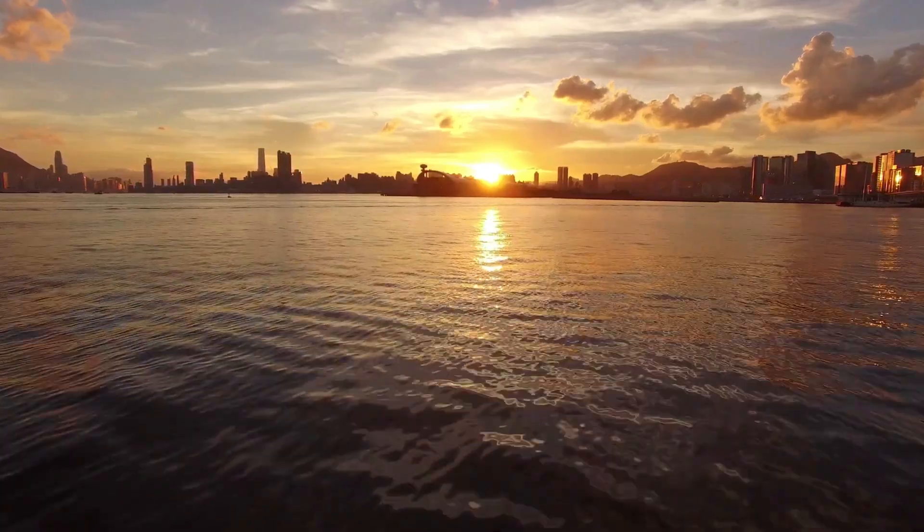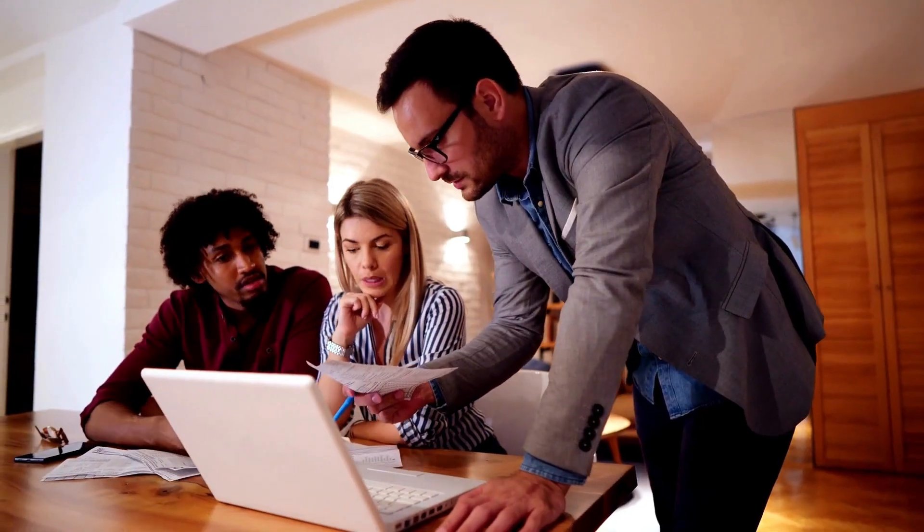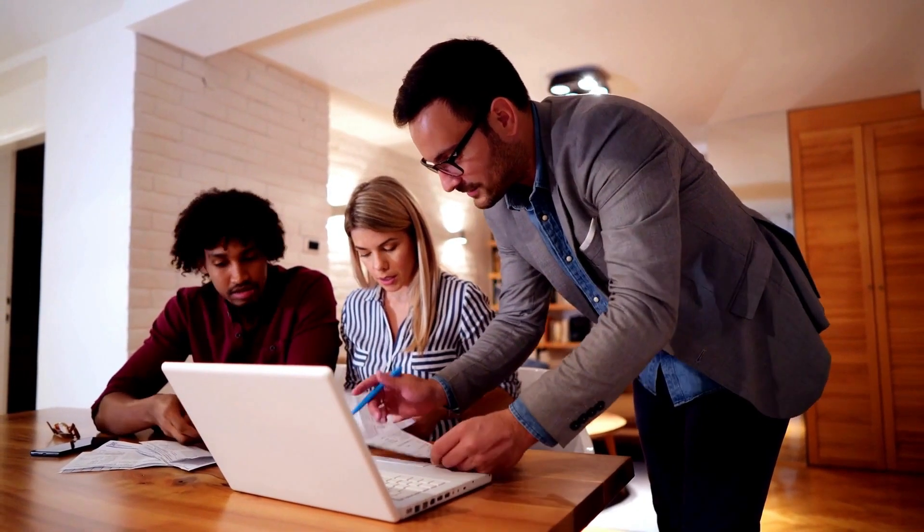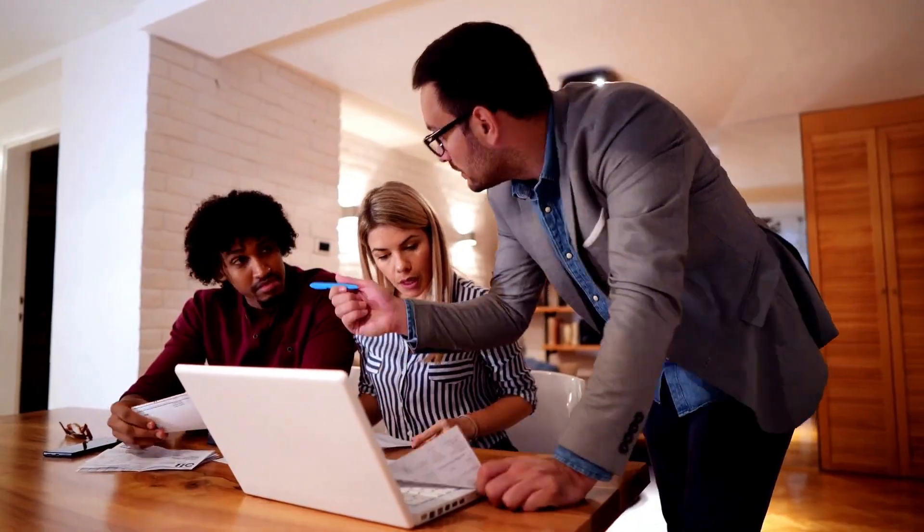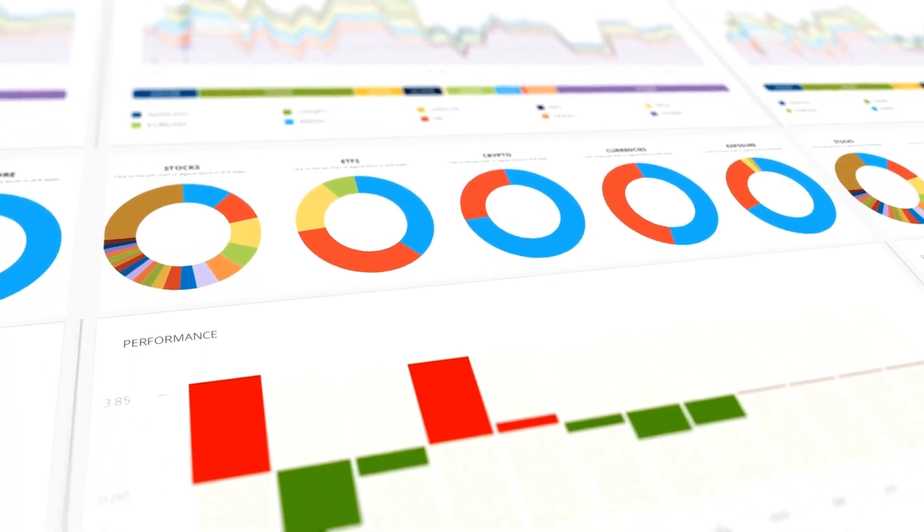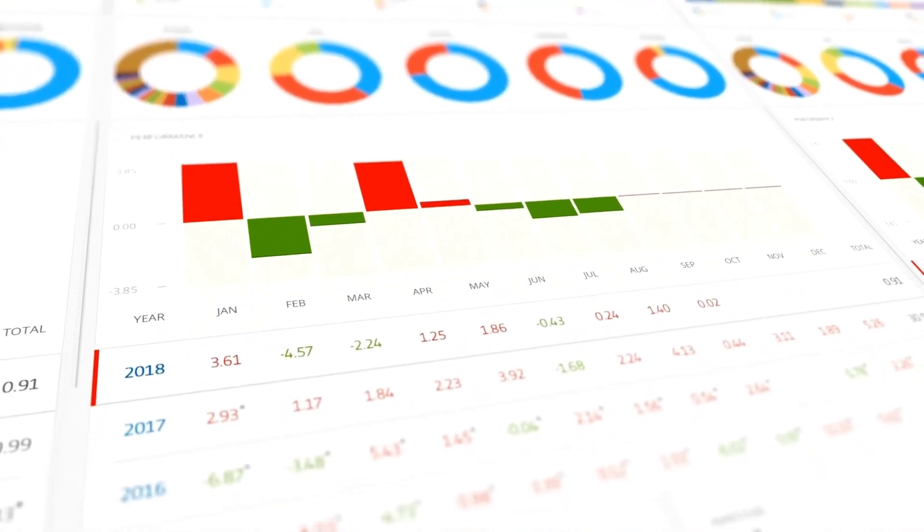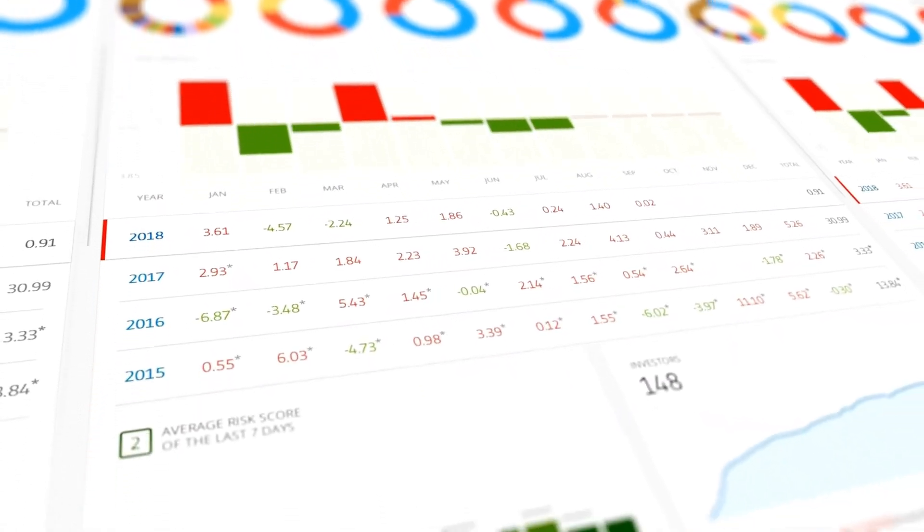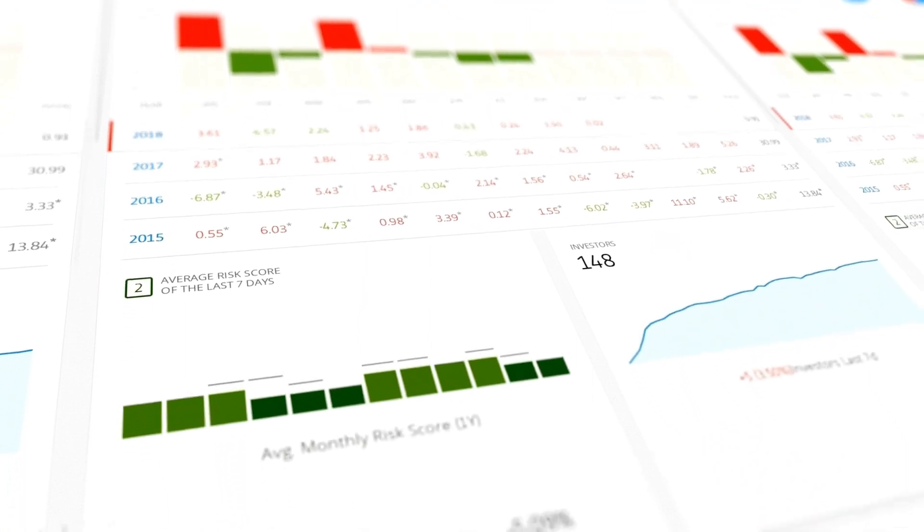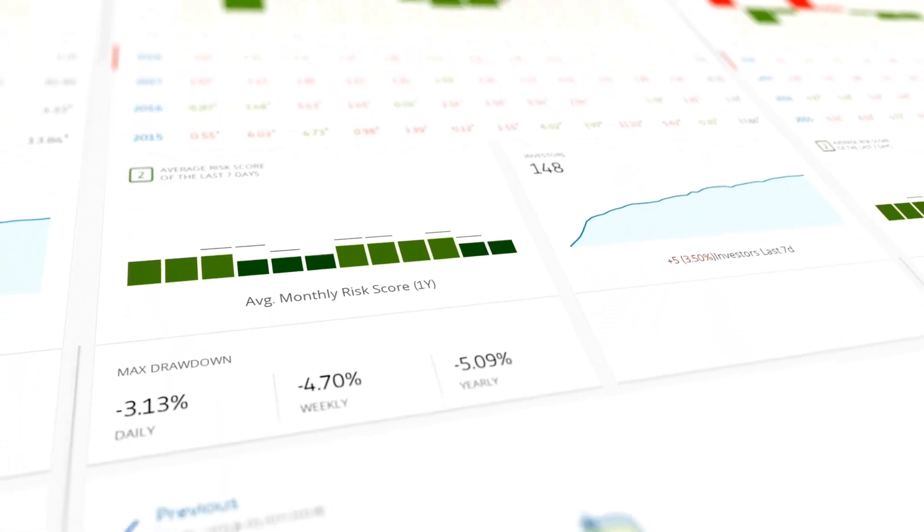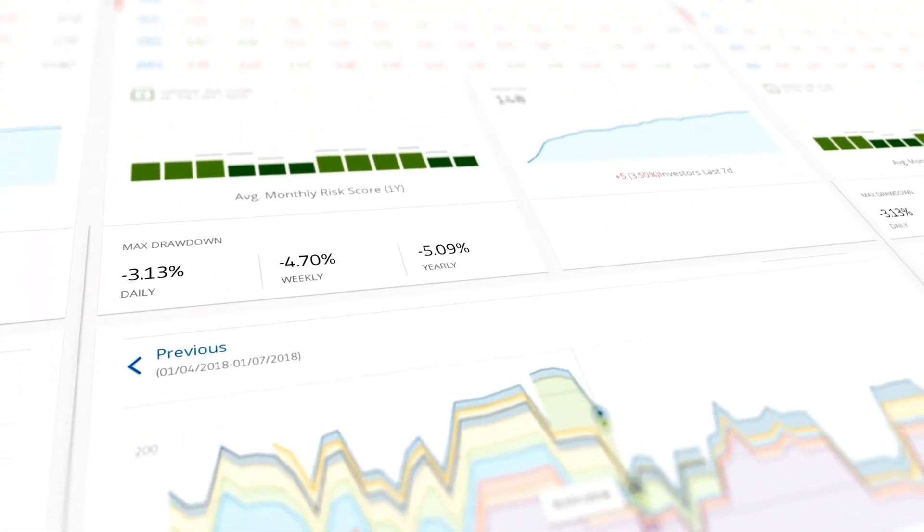The first concept is net worth. Net worth is the difference between your total assets and your total liabilities. In other words, it's what you own minus what you owe. Your net worth is a measure of your financial health and progress. You want to have a positive net worth, which means that you have more assets than liabilities.